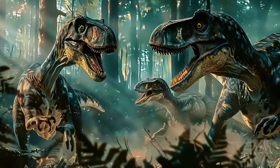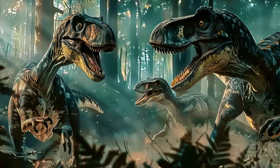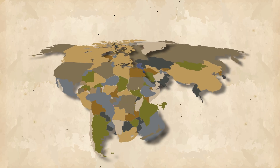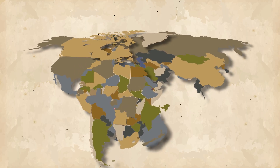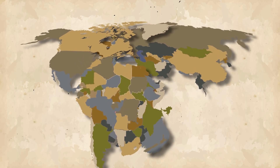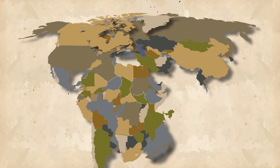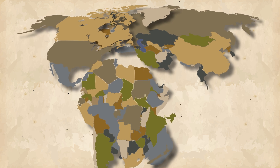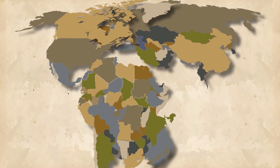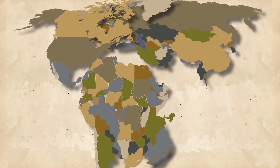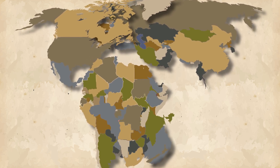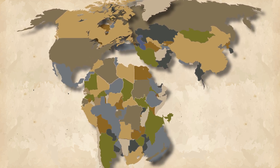In addition to the emergence of dinosaurs, the Triassic period saw the splitting of the supercontinent Pangea. The division of the continent strongly influenced the further development of the planet.